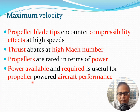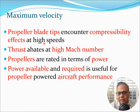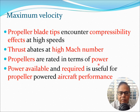Propeller blade tips actually encounter compressibility effects at relatively high speed — you may be well below Mach one but the propeller blade tips encounter compressibility. This also happens in helicopters, where rotor blade tips reach high Mach numbers even though the helicopter itself flies at low speed. Because of this, thrust abates at high Mach numbers for propeller systems. Propellers are rated in terms of power — in watts, kilowatts, or sometimes horsepower — and power available and required is the useful framework for propeller-powered aircraft performance.